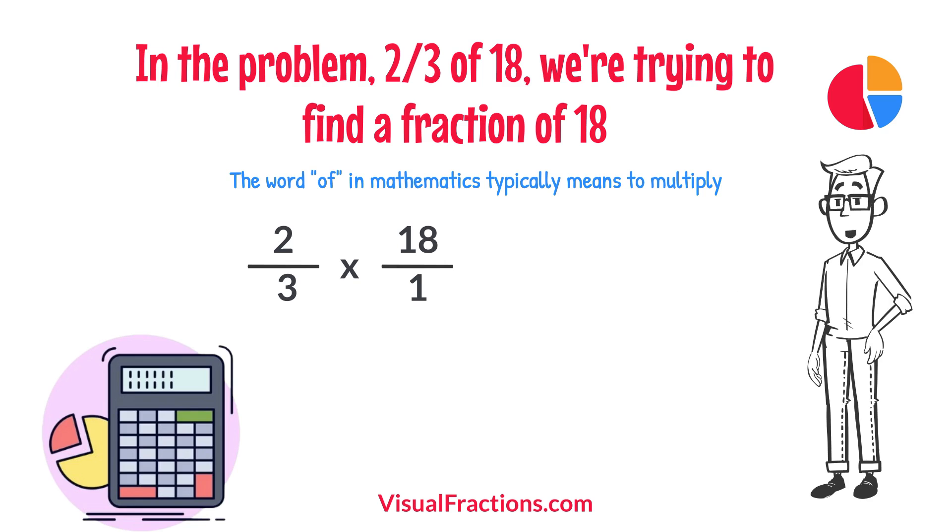Now, we proceed to multiply across. First, multiply the numerators, 2 times 18 equals 36.